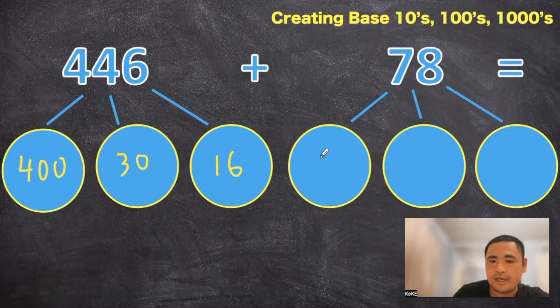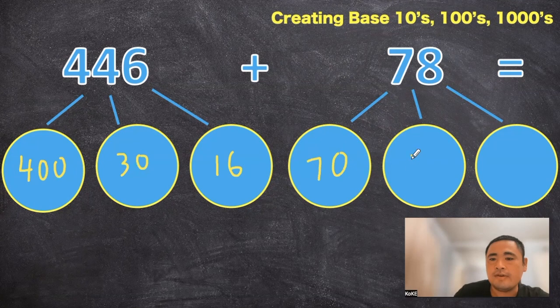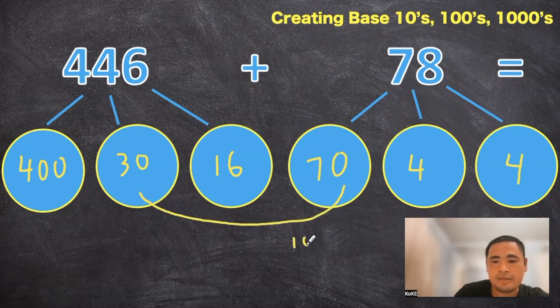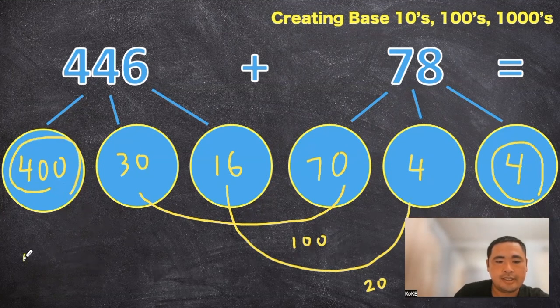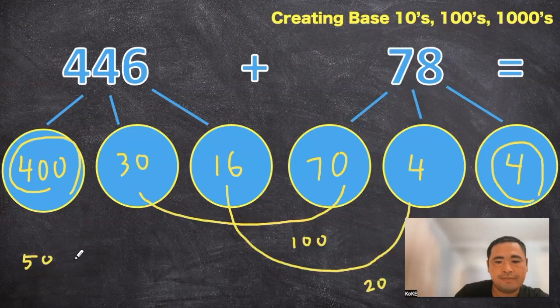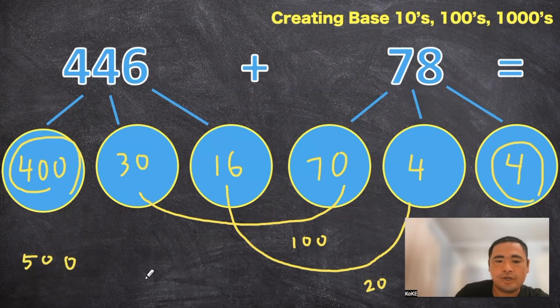So the seventy eight I'm going to break it apart as seventy four and four. So the thirty and the seventy can be paired together to make a hundred. The sixteen and the four can be paired up to make twenty. So you notice you have the four and the four hundred left over. So the four hundred and the hundred added together we can get five hundred. And then we have the twenty and the four left over. So your answer comes out to five twenty four.